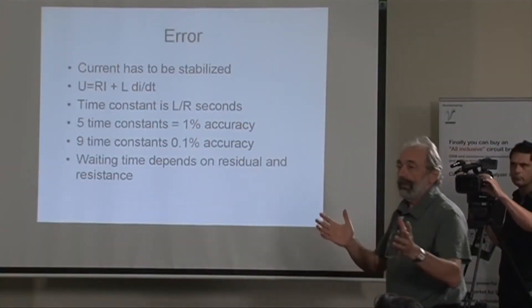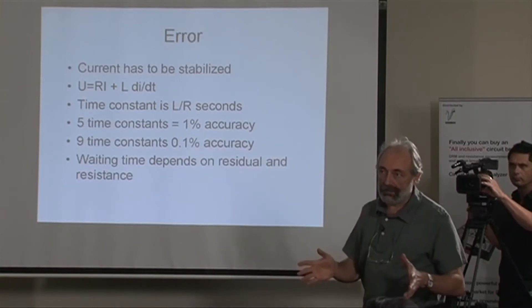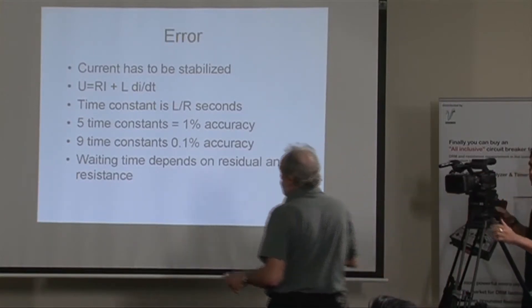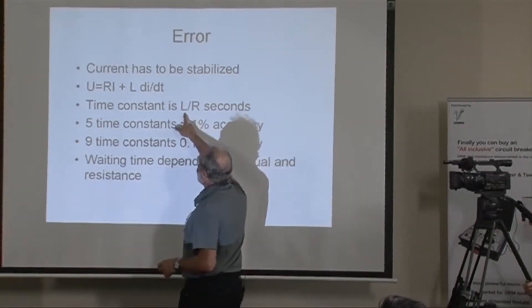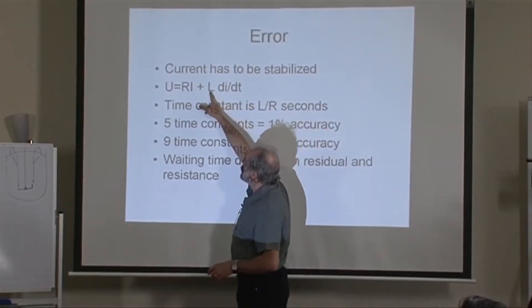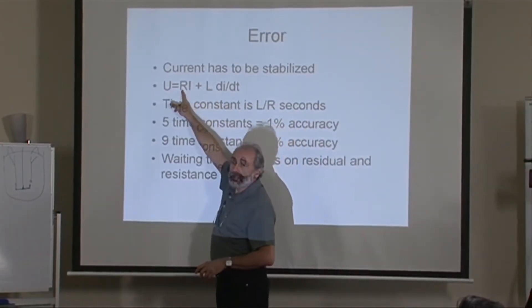It takes time for the current to stabilize, and it depends on the time constant. The time constant is L over R. This is my L, this is my R.